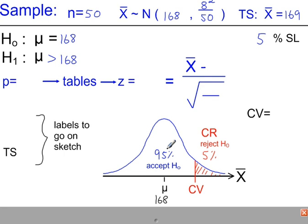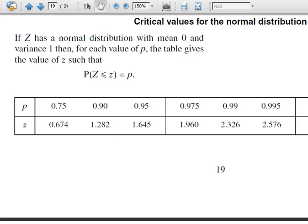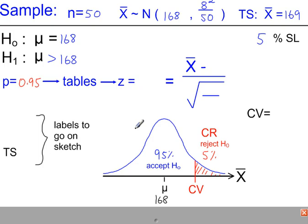So from the normal tables, we look up the probability as 0.95, which from page 19 in the formula book gives a Z value of 1.645. And it's a positive value.